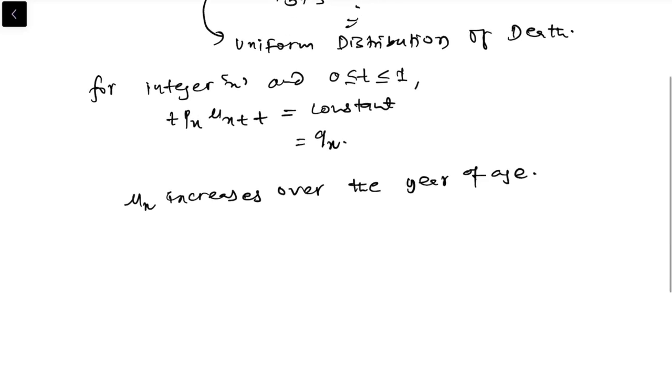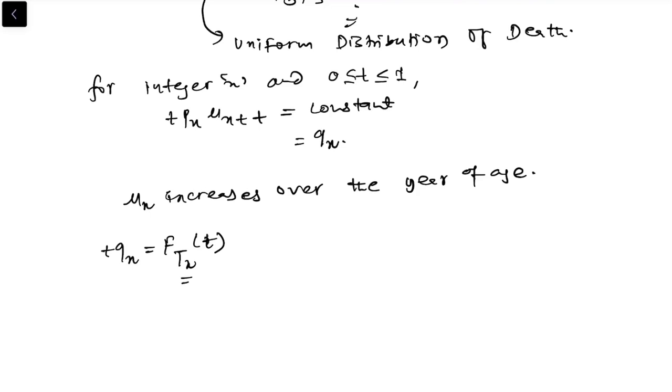Now if you remember, tqx is nothing but the CDF of the random variable tx. Here tx is the continuous random variable, meaning the exact number of years including fractions that a life currently age x will survive after age x.